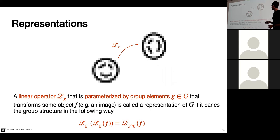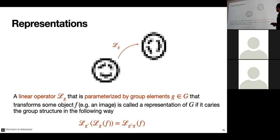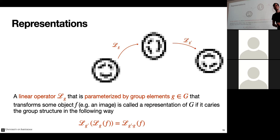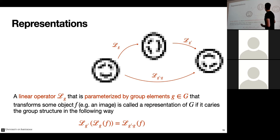A representation is a linear operator L_G parameterized by a group element G, defined such that it follows the group structure: if I apply transformation L_G and then apply another transformation L_{G'}, the net transformation is given by L applied to the group product G·G'. So transformation one followed by transformation two gives a net transformation described by this group product. This is the basic of group theory — everything relies on this group product.